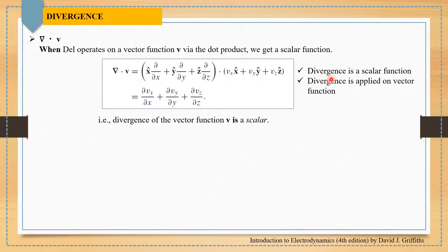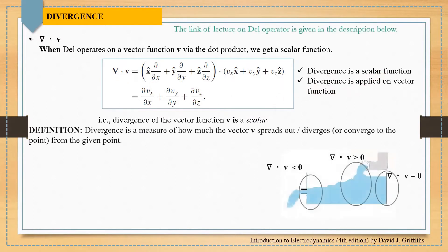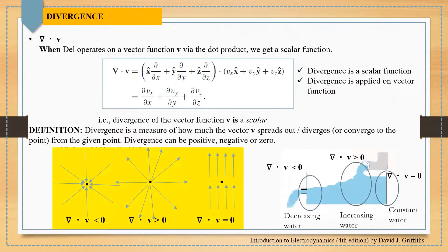We can say divergence is a scalar function and divergence is applied on a vector function. In words, divergence is a measure of how much the vector v spreads out or converges at a point. Divergence can be positive, negative, or zero.